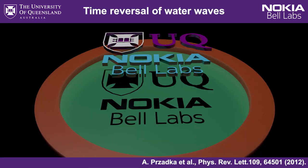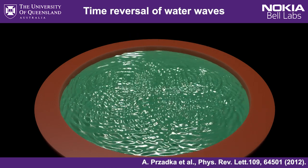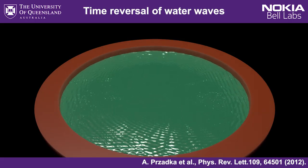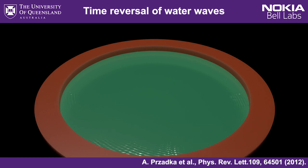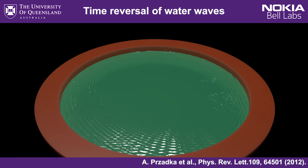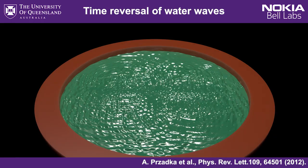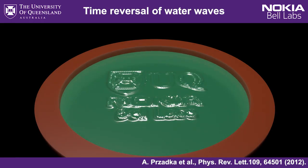Here we have a tank of water. We're going to disturb the water by dropping in these logos, and the waves from that disturbance propagate out towards the boundary of the tank. Now imagine that the walls of the tank have the ability to record the waves and can then vibrate to recreate those waves in reverse order. In doing so, it creates the time-reversed wave which propagates as if we're watching a video of the original disturbance in reverse, until ultimately it recreates the indent of those logos at the instant they hit the water.